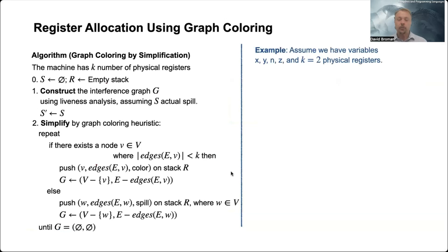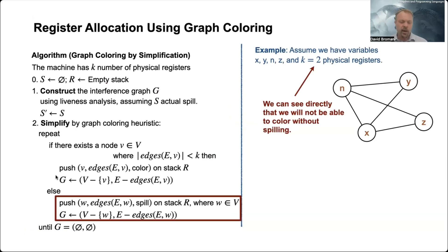Okay, so this was the case where everything went well, when we just could push things on the stack and assign colors. But assume now that we have the same setup, but we only have two registers. Then we see directly this is basically impossible to put everything on physical registers, so you need to have a way to spill.